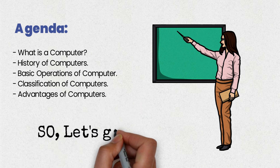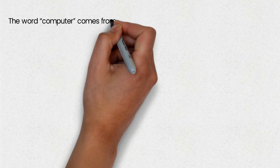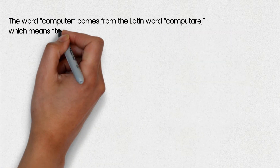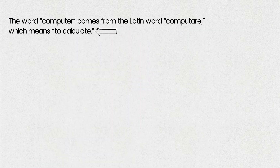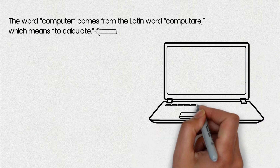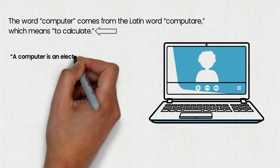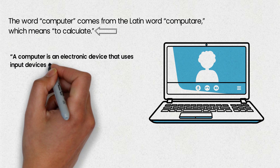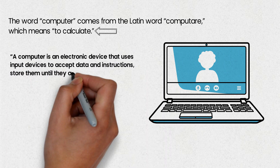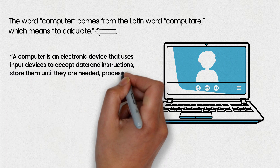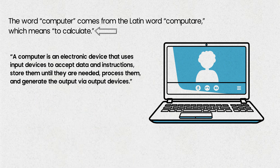So let's get started. The word computer comes from the Latin word 'computare' which means to calculate. We can define a computer as an electronic device that uses input devices to accept data and instructions, store them until they are needed, process them, and generate the output via output devices.